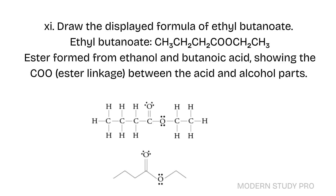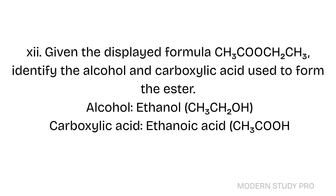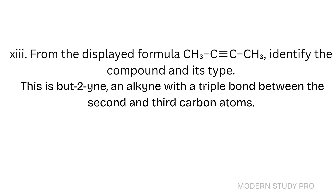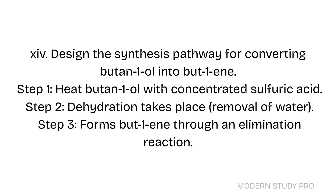Short Question 11: Draw the displayed formula of ethylbutanoate — the ester formed from ethanol and butanoic acid, showing the COO ester linkage between the acid and alcohol parts. Short Question 12: Given the displayed formula, identify the alcohol and carboxylic acid used to form the ester. Carboxylic acid: ethanoic acid (CH3COOH). Short Question 13: From the displayed formula CH3-C≡C-CH3, identify the compound and its type. This is but-2-yne, an alkyne with a triple bond between the second and third carbon atoms. Short Question 14: Design the synthesis pathway for converting but-1-ol into but-1-ene. Step 1: Heat but-1-ol with concentrated sulfuric acid. Step 2: Dehydration takes place — removal of water. Step 3: Forms but-1-ene through an elimination reaction.